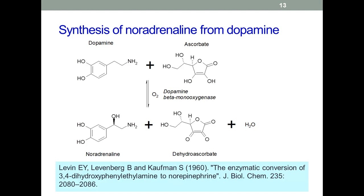This is a summary of the pathway for synthesis of noradrenaline from dopamine. Noradrenaline is a neurotransmitter involved in stress response — in American sources it's often referred to as norepinephrine. It's sometimes called a fight-or-flight hormone, since it increases heart rate, dilates the pupils, and dilates air passages in the lungs. Vitamin C is involved in a hydroxylation reaction mediated by the enzyme dopamine beta-monooxygenase, which converts dopamine to noradrenaline. This is an example of the oxyreductase class of enzymes involved in oxidation reactions.